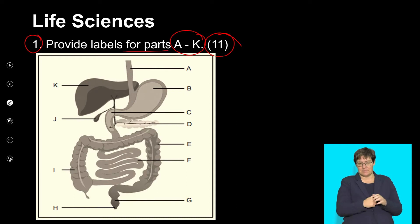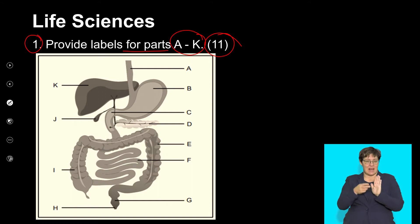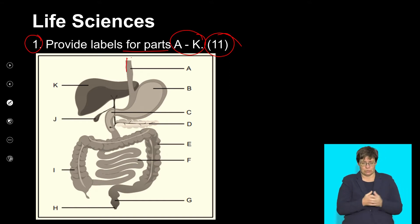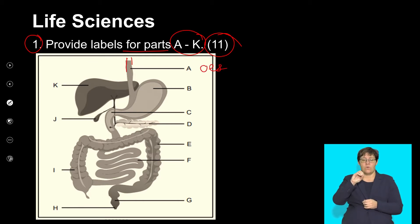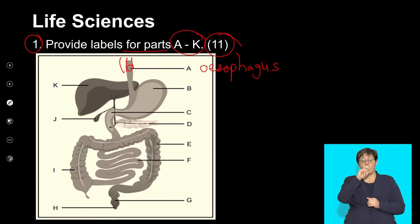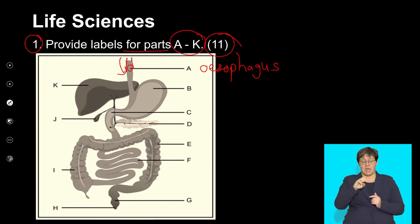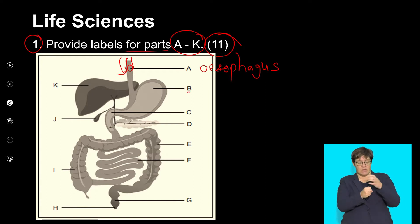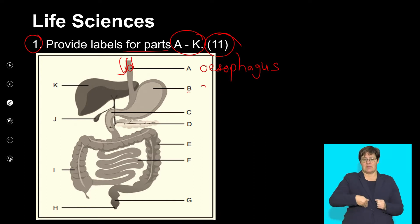Looking at this diagram, A points to the tube that connects to the stomach — that's the esophagus. Remember that this is where the bolus, which is that ball of food, moves down through a process called peristalsis. Label line B points to this muscular organ, which is the stomach. It is in the stomach that the first process of chemical digestion of proteins begins.